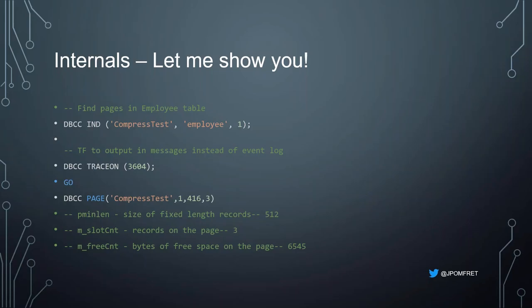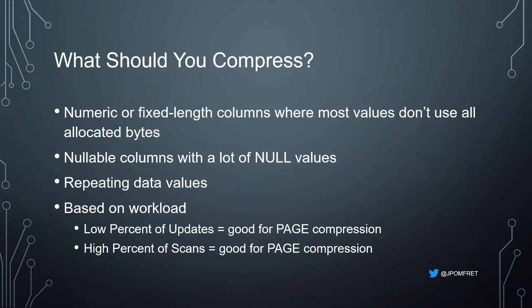The commands are in the slides if you want to play around with them — there are also good blog posts linked in the downloads. So what should we compress? Numeric or fixed-length columns where values don't use all allocated bytes create a lot of free space, so row and page compression give a lot of benefit. Also any nullable columns with many null values, and any repeating data values — the dictionary compression pulls those out.